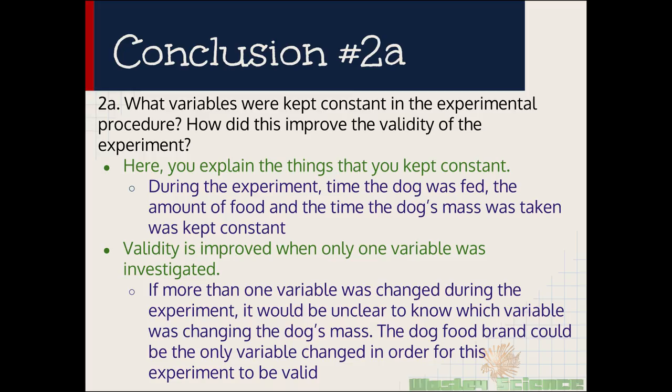Moving on to conclusion 2a. What variables were kept constant in the experimental procedure? How did this improve the validity of the experiment? Here, you explain the things that you kept constant. You should do at least 3. In your paragraph, you should have at least 3. During the experiment, the time the dog was fed, the amount of food and the time that the dog's mass was taken was kept constant. Validity is improved only when one variable was investigated. So here's what you do for the validity part. You write something about how you only changed one thing and how if you didn't change one thing, it would have made the experiment not be a controlled experiment. If more than one variable was changed during the experiment, it would be unclear to know which variable was changed in the dog's mass. The dog food brand could be the only variable changed in order for this experiment to be valid. So you're just justifying why you only changed one thing.